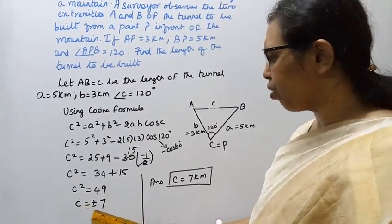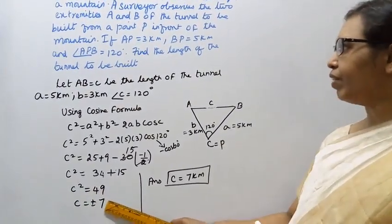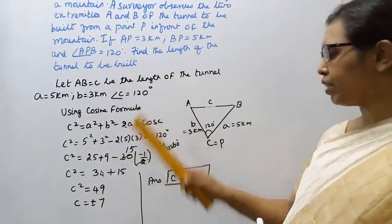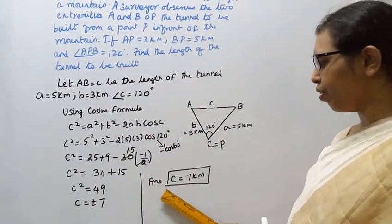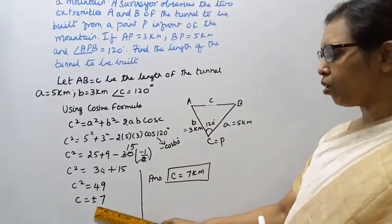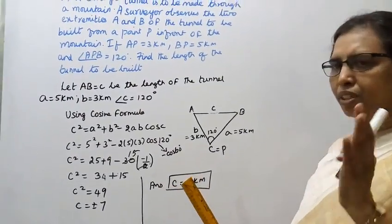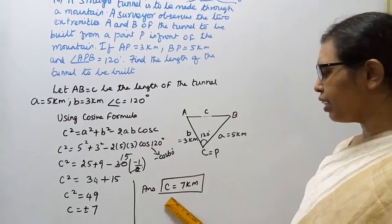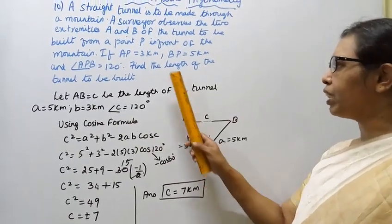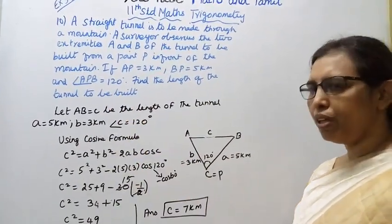C squared equal to 49, C equal to plus or minus 7. Length of the tunnel to be built is 7 km.